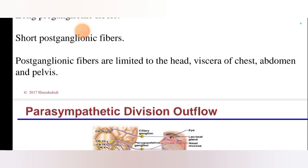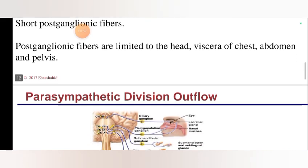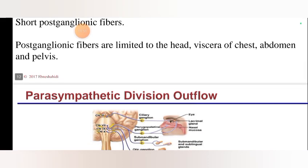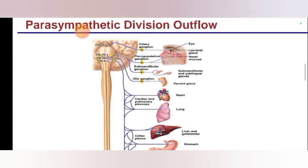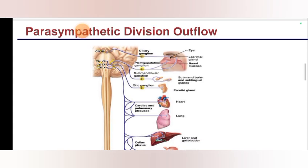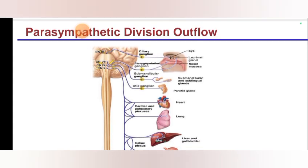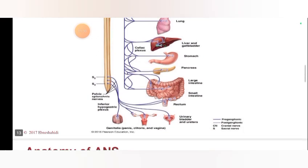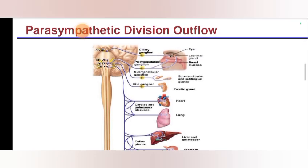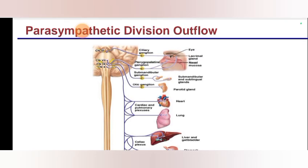Post-ganglionic fibers are limited to the head and the viscera of the chest, abdomen, and pelvis. This is the diagram of the parasympathetic divisions and the outflow.